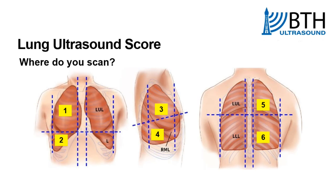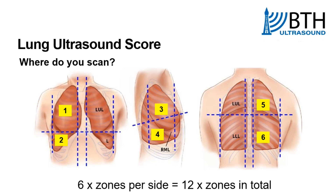Whereabouts do you scan? You scan six zones per hemithorax, so 12 for the whole thorax itself. The first two are anteriorly, very similar to the blue points that are taught in FUSIC and advocated by Daniel Leschenstein. You then have two zones in the axilla, in the mid-axillary line, and then two zones posteriorly for each side — six zones per side, 12 zones in total.